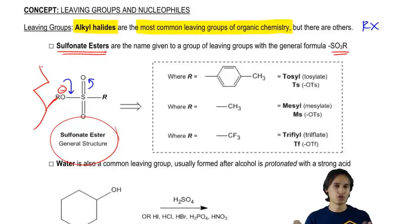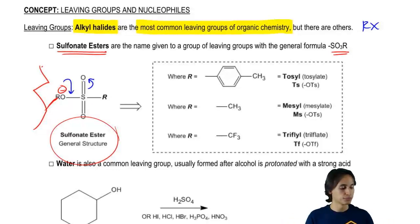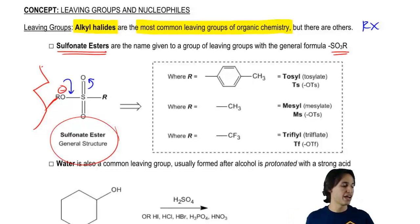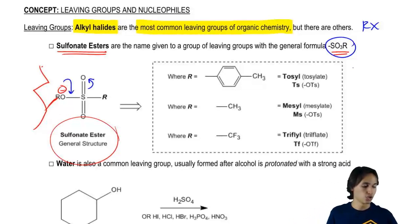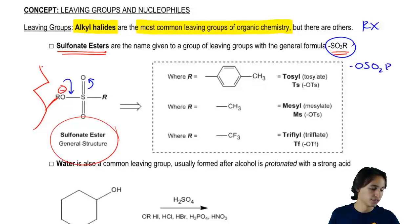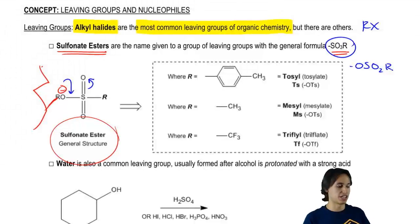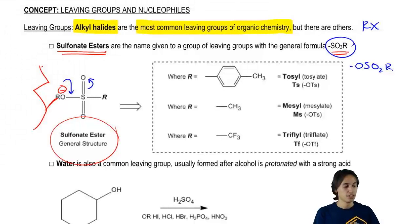It stabilizes the leaving group just like a conjugate base would be stabilized by the resonance effect — remember that parallel between conjugate bases and leaving groups. The sulfonate ester might just be drawn as SO3R, and you need to know what that is. You might also see it drawn as OSO2R — same thing, that's just the way it's drawn out with the O first. You need to be able to recognize that that's a leaving group.